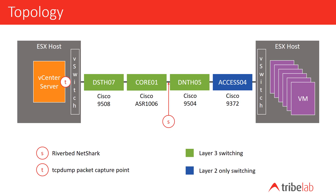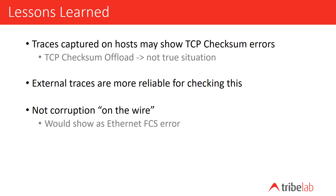Here are the lessons learned. Traces captured on a host may show TCP checksum errors, but we need to be careful that they are true errors and not due to TCP checksum offload. External traces are more reliable for checking this situation. And we knew it wasn't corruption on the wire because, if it had been, we would have seen Ethernet frame check sequence errors.